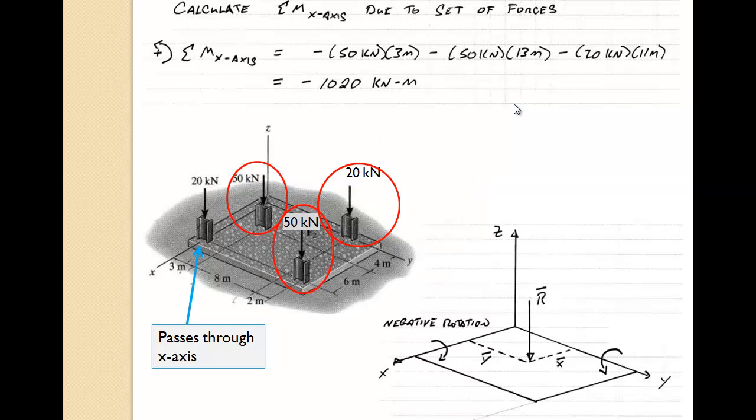All right, so the second thing is to calculate the moment about the x-axis that results from the application of these four forces. We see that the 20 kilonewton load passes through the x-axis, so it doesn't have any moment arm.